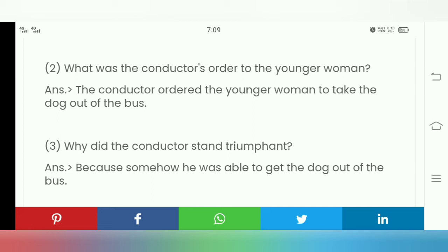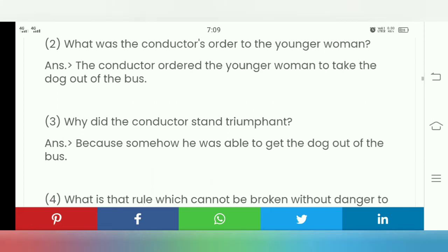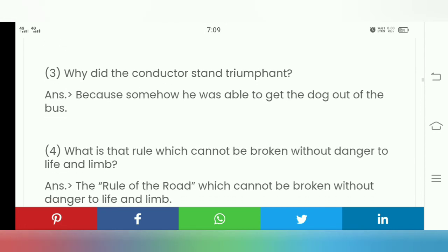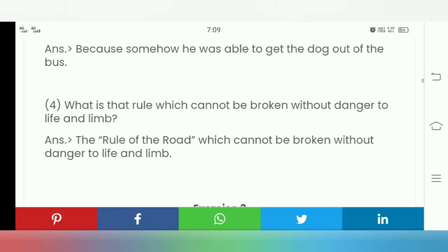Why did the conductor stand triumphant? Here triumphant means victorious, because somehow he was able to get the dog out of the bus.